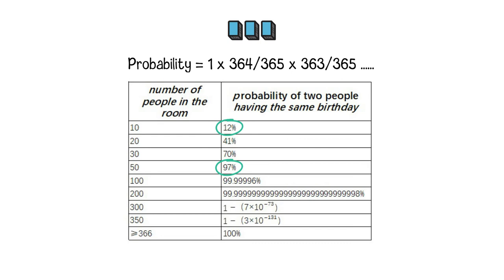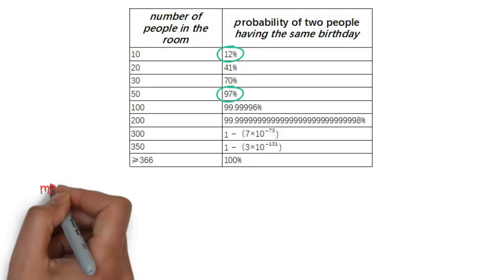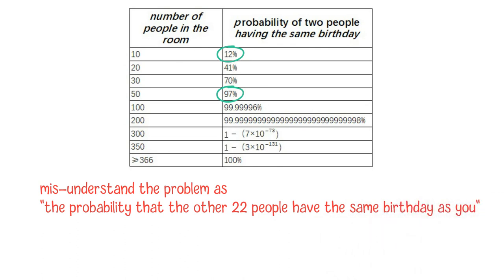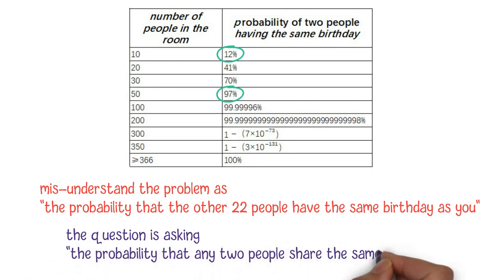The reason that most people intuitively think that the probability that two out of 23 people have the same birthday should be much less than 50% is because they may misunderstand the problem as the probability that the other 22 people have the same birthday as you. If you notice that the question is asking the probability that any two people share the same birthday, you may realize that the result will be much more than you previously thought.